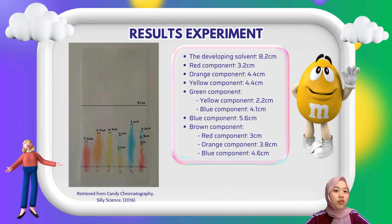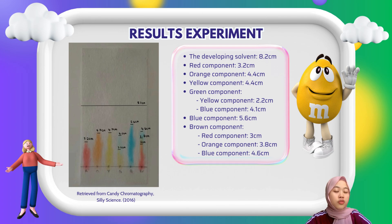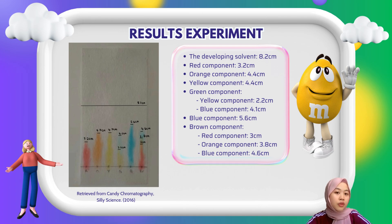The developing solvent moved up the paper by 8.2 cm. The red component traveled 3.2 cm. Both the orange and yellow components traveled 4.4 cm. The green sample split into two: yellow moved 2.2 cm and blue moved 4.1 cm. The blue dye traveled the furthest at 5.6 cm.